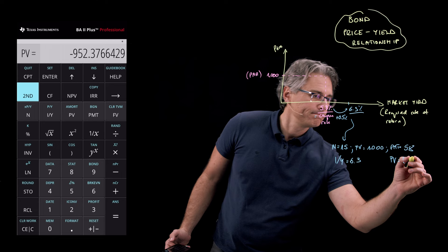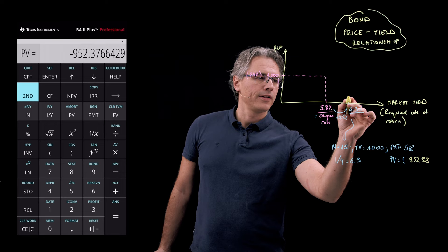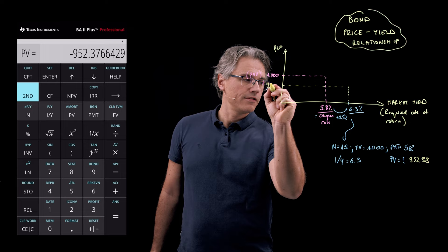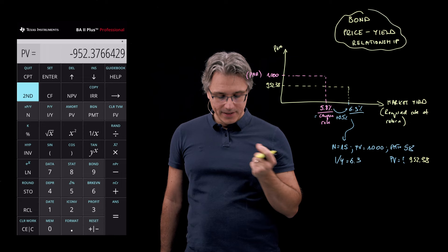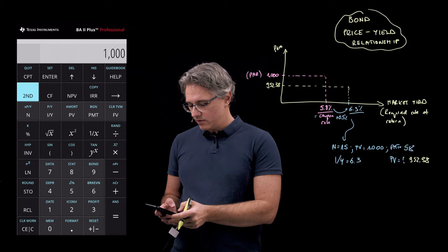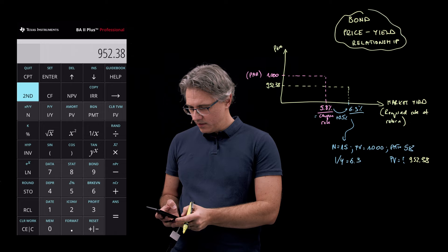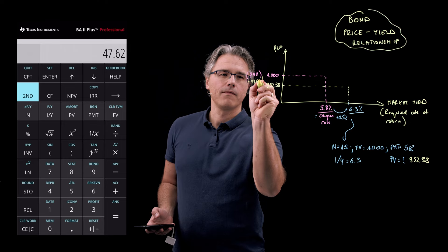And let me show this on our graph here. 952.38. And let's see what the size of this drop is. Well, it's a drop from 1,000 to 952.38. So, a drop of 47.62, which means the statement made by Cormac was absolutely right.